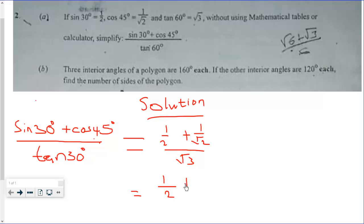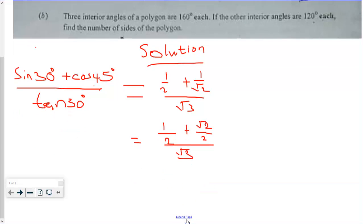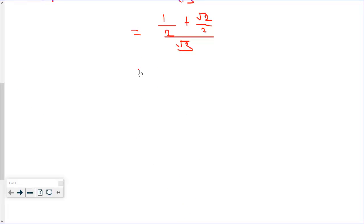Now this will give us 1/2 plus √2/2 all over √3. This will give us (√2 + 1)/2 then all divided by √3. Now this is the same as (√2 + 1) over 2√3.